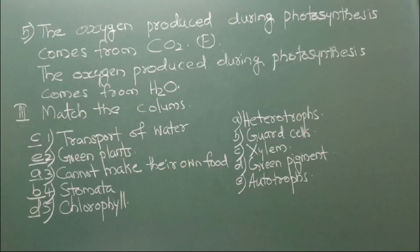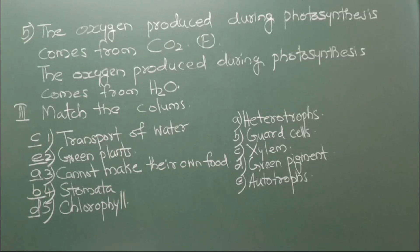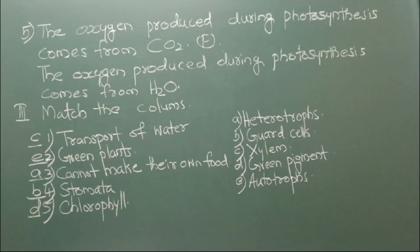Now we will see match the columns. Number 1: Transport of water — the answer is xylem. Number 2: Green plants — the answer is autotrophs. Cannot make their own food — the answer is heterotrophs. Stomata — guard cells. Chlorophyll — the answer is green pigment.